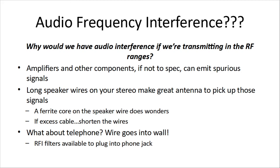If this is affecting your telephone and you can't rip the wires out of the wall, you can get RFI filters that plug into the phone jack and then your phone plugs in — very similar to what's used when you have a DSL line, to stop the DSL hiss signals from coming through on your phone conversations.